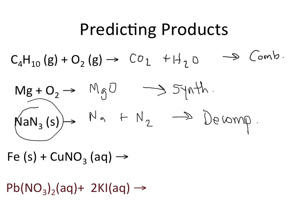In this fourth reaction, notice I have one element in its elemental form and one compound — that's usually going to be suggestive of a single replacement reaction. Notice this is iron. Iron is a metal, so it's going to form a positive charge and replace the positively charged ion in the compound. So we're going to get Fe(NO3) and copper solid — single replacement.